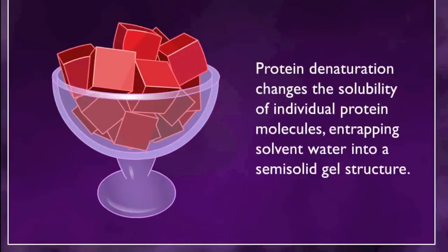This familiar gelatin dessert is a good example of the process of coagulation of proteins into a three-dimensional latticework that entraps water molecules to produce a semi-solid gel. This animation explains the physical chemistry behind the process.